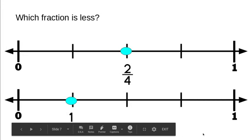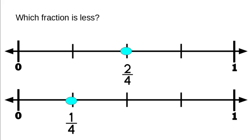This question wants to know which fraction is less. These two number lines are broken up into fourths — we have two fourths on the first number line and one fourth on the second. Would you say two fourths is less than one fourth, or one fourth is less than two fourths? Which one is the smaller fraction? It is one fourth.